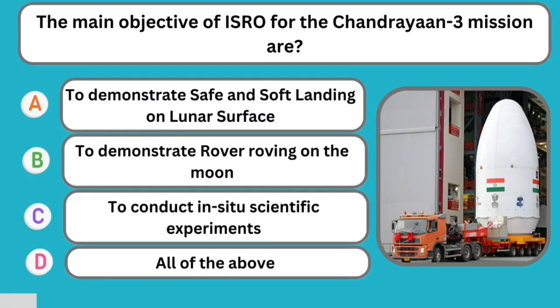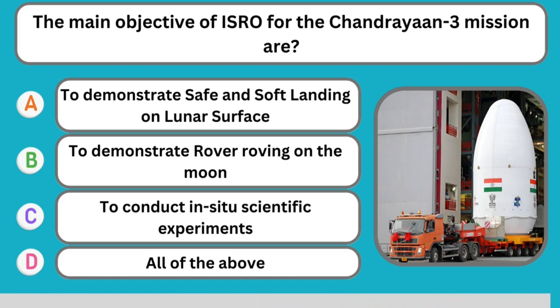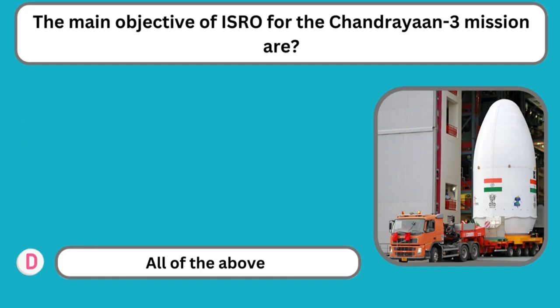Question number thirteen: The main objectives of ISRO for the Chandrayaan 3 mission are to demonstrate safe and soft landing on the lunar surface, to demonstrate rover roving on the moon — the answer is all of the above.